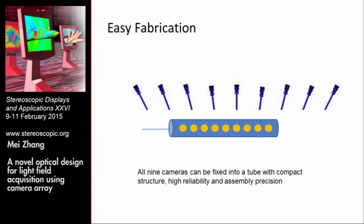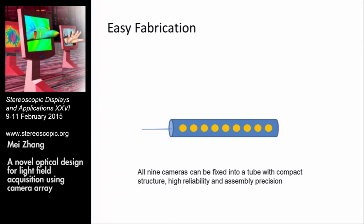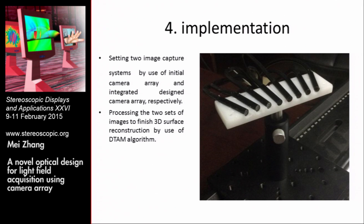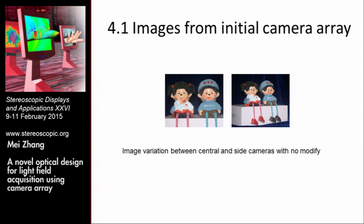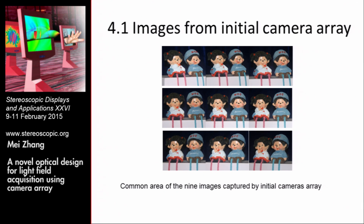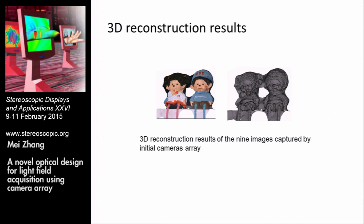All nine cameras can be fixed into a tube with a compact structure, which enhances reliability and assembly precision. We built two image capture systems using the initial camera array and the integrated designed camera array respectively, and processed both sets of images to finish 3D surface reconstruction using the DTIM algorithm. The images captured by the initial camera array show that the left image from the center camera and the right from the side camera differ — the feet of the dolls cannot be seen in the center camera image. We pick up the common area of the nine images for further processing, and the 3D reconstruction result also fails to show the feet of the dolls.